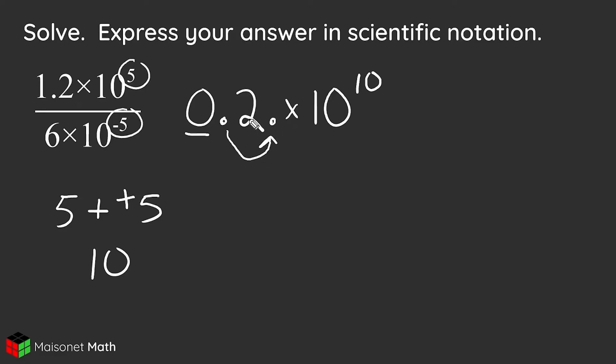So we're increasing this value by a power of 10, which is 10 to the first. And so we do the opposite with this value right here. We decrease it by 1 power of 10. So we have to rewrite this as 2.0 or just 2 times 10 to the ninth power.